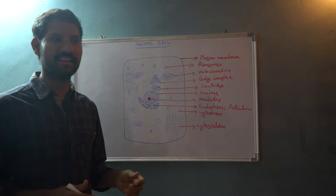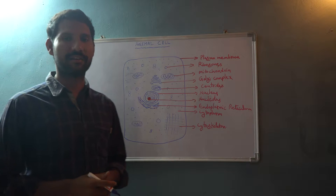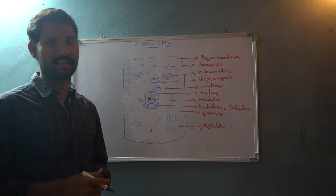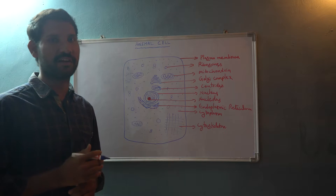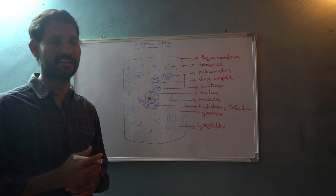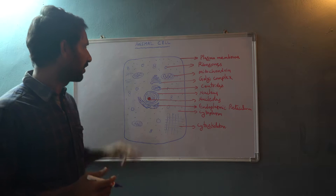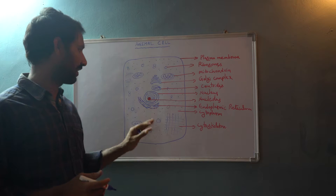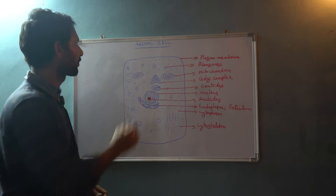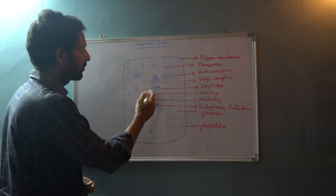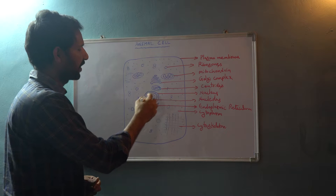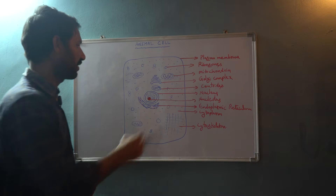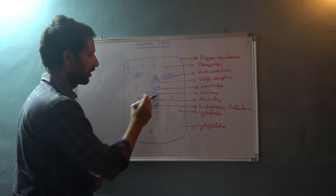Let us now talk about the structure of the animal cell and what cell organelles are present. In the animal cell, we can observe different types of cell organelles.